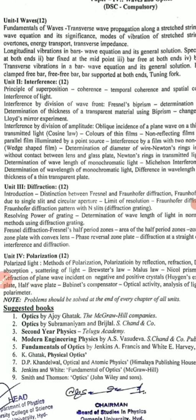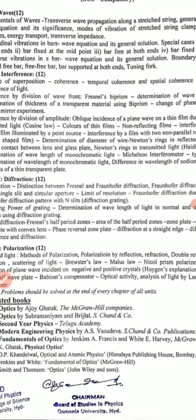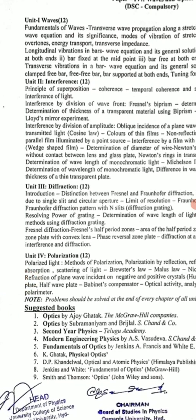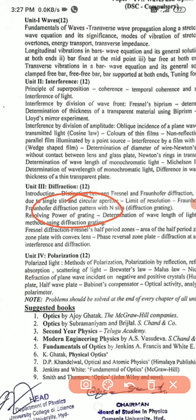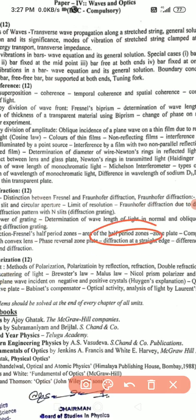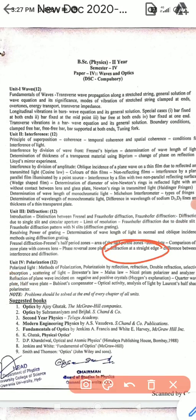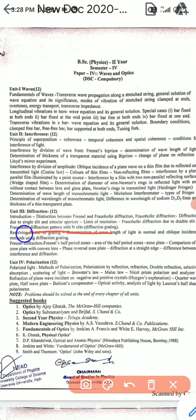In the third unit, for short answers: difference between Fresnel and Fraunhofer diffraction, and difference between interference and diffraction. First part: Fraunhofer diffraction — single slit, double slit, N slits. Second part: Fresnel's half-period zones, area of half-period zones, zone plate, and diffraction at straight edge — important long answer. My suggestion: read either Fresnel or Fraunhofer diffraction to get one long answer. If time is less, go for the second part — Fresnel's half-period zones, zone plate, and diffraction at straight edge.